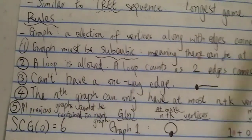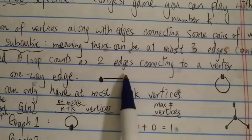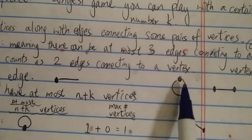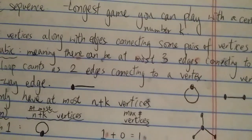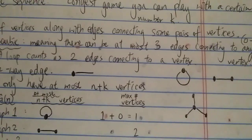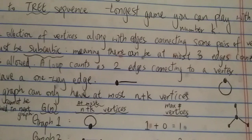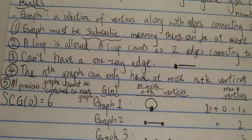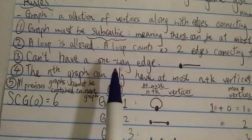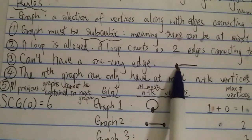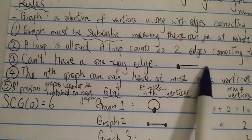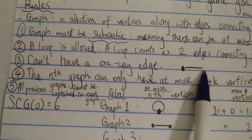The second rule is that a loop is allowed. A loop counts as two edges connecting to a vertex — that is the definition of a loop. The third rule is that you cannot have a one-way edge. This is not allowed: if you have a vertex connected by an edge, you must have another vertex on the other end — something dangling like that is not allowed.